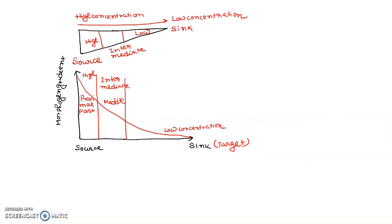Morphogen gradients play an important role in developmental biology. In the source cells, the concentration of the morphogen is high; in the sink cells, the concentration is low; and in intermediate regions, the concentration is intermediate. There is also a threshold value that determines cell fate.